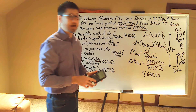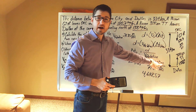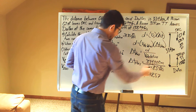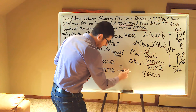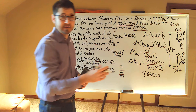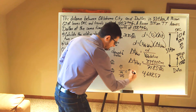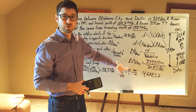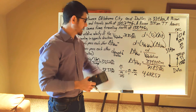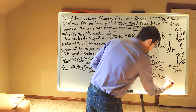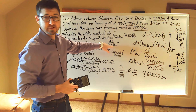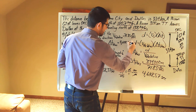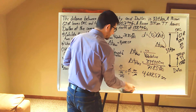Let's check the units. In the numerator we have meters; dividing by meters per second is the same as multiplying by seconds per meter. The meters cancel, leaving us with units of seconds. So the time that the two cars pass each other is 4,648.57 seconds.